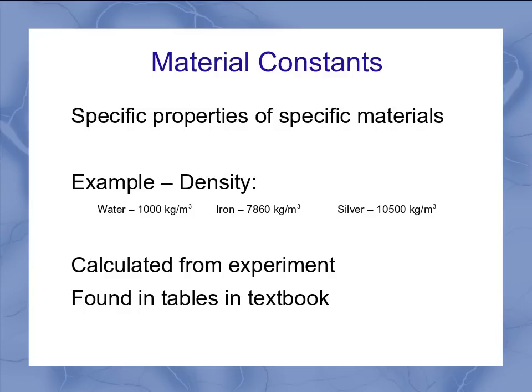These are generally calculated from experiments using samples of water, or samples of iron, or whatever material you're talking about, and they're found in tables in the textbook. It can vary which values you're given in each textbook. They're going to list the more common ones, and the slight values can change. And it's going to depend whether it's perfectly pure iron, or if it's got a little impurities in it. So you could have slightly different values listed.